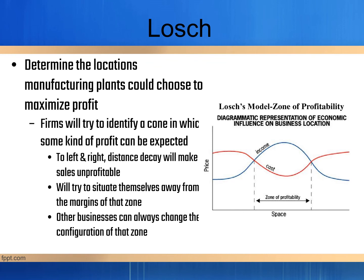The Lösch model determines the locations manufacturing plants could choose to maximize profits. Firms will try to identify a cone in which some kind of profit can be expected. To the left and the right, distance decay will make sales unprofitable. They will try to situate themselves away from the margins in that zone, and other businesses can always change the configuration of that zone.